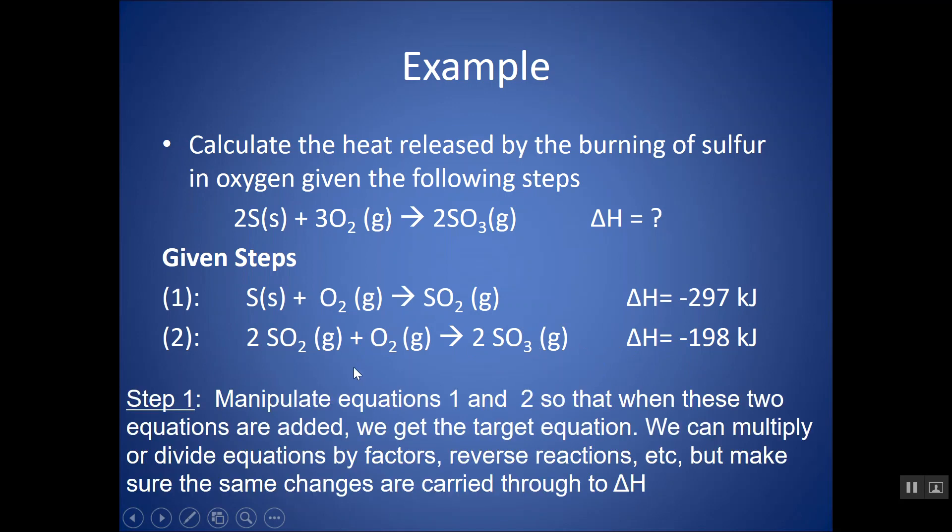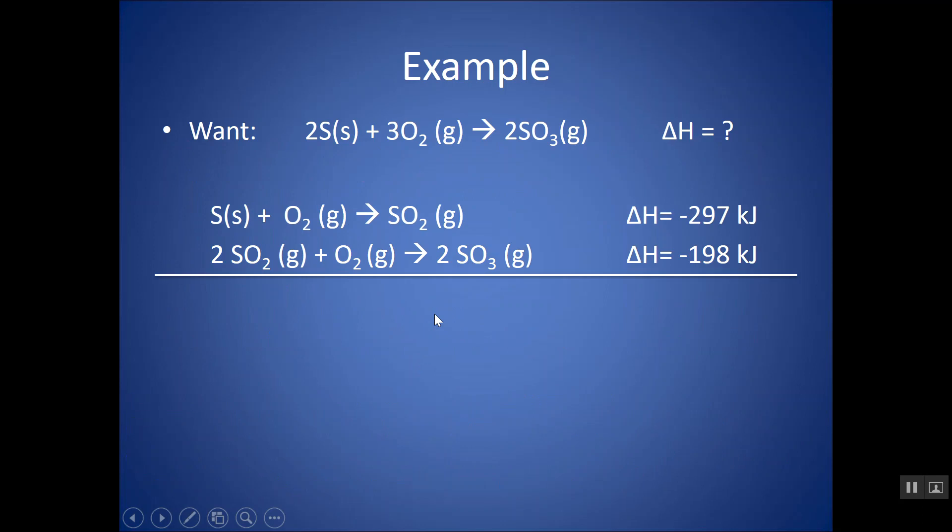And then I see 2SO3. Where do I see SO3? It's in the second reaction. Is it on the correct side? Yep, it's a product, so I don't want to flip anything. Does it have the correct coefficient? Yes, it does. So, I don't want to make any changes to my second reaction. All I'm doing is I'm manipulating my steps so that when these two are added, I can get the target equation.